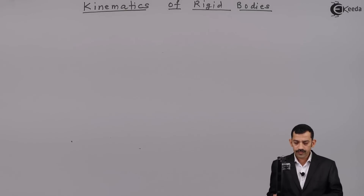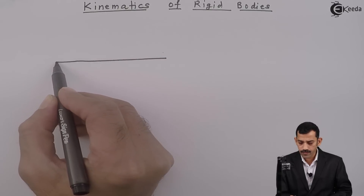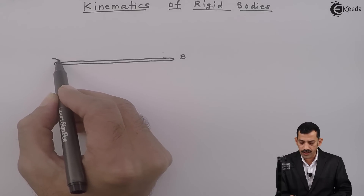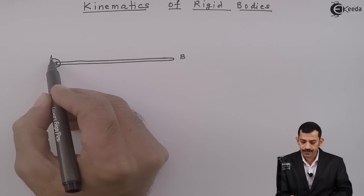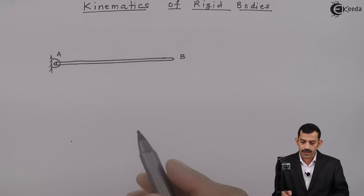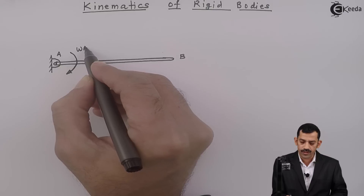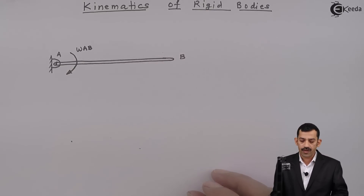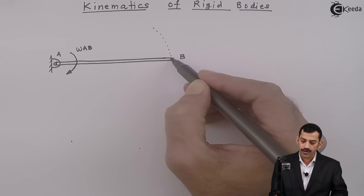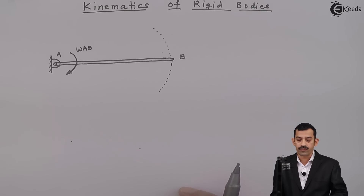Now if we assume one bar AB, which is hinge supported at A. At this end, as there is hinge support, rotational motion is allowed. This represents the direction of angular velocity. Bar rotates about point A with some angular velocity, omega AB. If bar rotates about this point, end B traces a curved path or arc of a circle. For one revolution, end B traces a circle of radius equal to the length of bar AB.